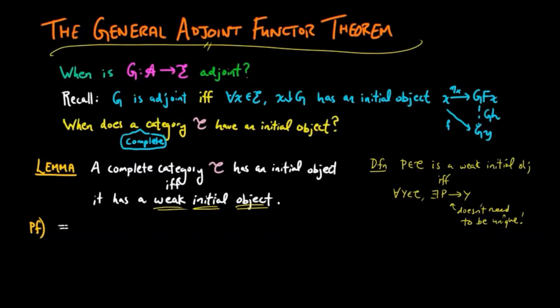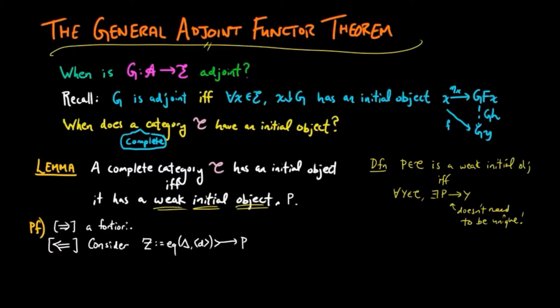Let's prove this. In the forward direction, this is just a priori: the initial object is a weak initial object. Conversely, we need to construct a candidate initial object. Given the weak initial object P, we're going to construct a sub-object of it which will be our initial object. Since our category is complete, we set Z equal to the equalizer of delta and bracket D, where these two morphisms have domain P and codomain a product of P indexed by the endomorphisms from P to P. The morphism delta is given by the universal property such that post-composition by the D-th projection gives the identity — so it's like a diagonal — and the bottom morphism is given by the universal property through the product such that post-composition by the D-th projection gives the morphism D.